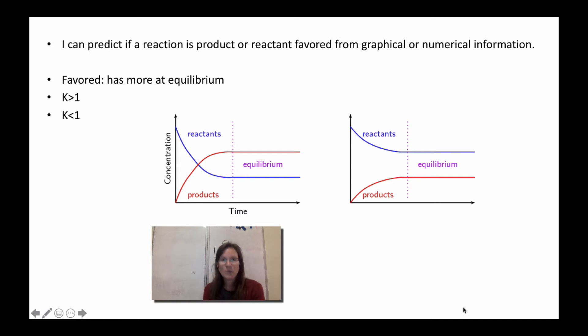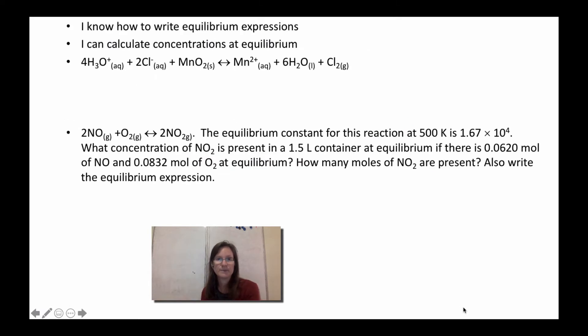If you had numeric information, that's based on K. K is always product over reactant. So if K is greater than one, that means I'm product favored because that numerator will be bigger. And if K is less than one, I'm reactant favored because the denominator will be bigger. So favored really means just whatever's bigger. If you have more product it's product favored, more reactants is reactant favored. K greater than one product favored, K less than one reactant favored.